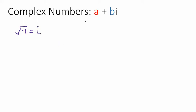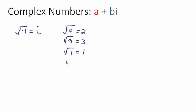A complex number is in the form a plus bi. What is i? Well, i is a number defined as the square root of negative 1. If you've worked with square roots before, you know the square root of 4 is 2 and the square root of 9 is 3. But if I give you the square root of negative 1, you're stuck, because we say we can't take the square root of a negative.